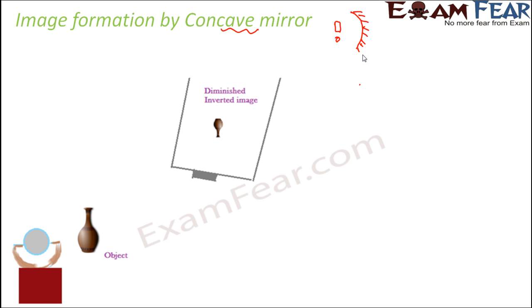Just to remind you what is concave: 'cave' means something which goes inside, so the inside surface is going to be the mirror. Your object is going to be somewhere here. This is your concave mirror, this is your object, and this is the image.